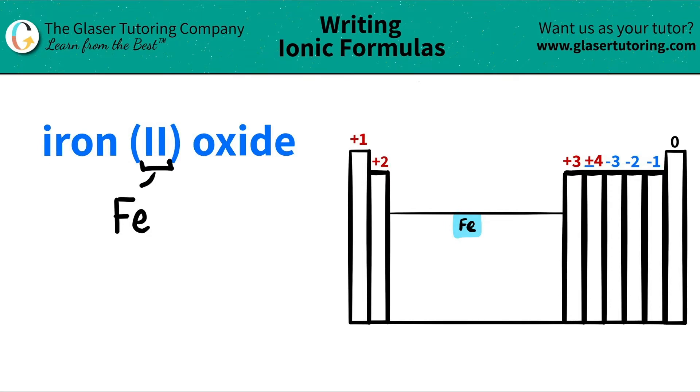Remember, the Roman numeral is always the charge of the metal. So in this case, I see a 2, so I know that iron is going to be a +2 charge. And metals are always positive, never negative.